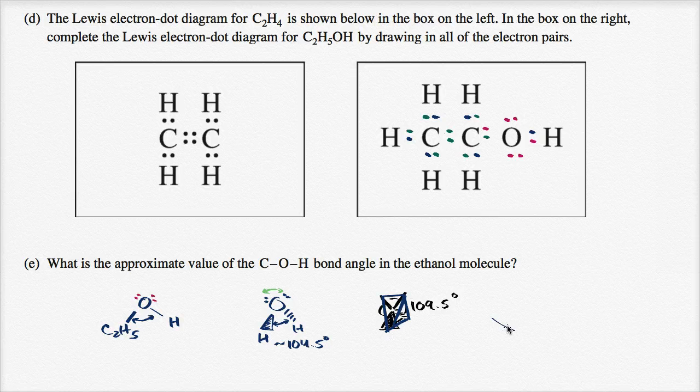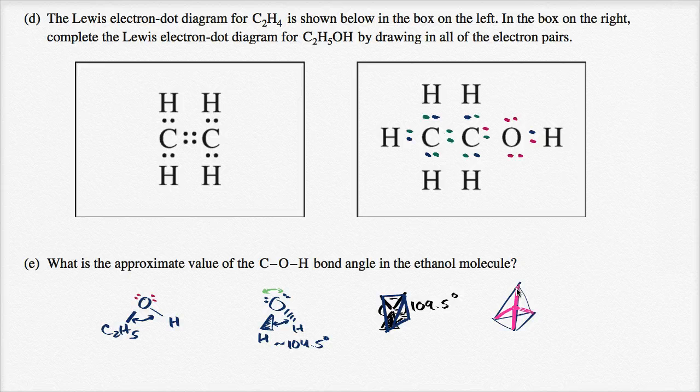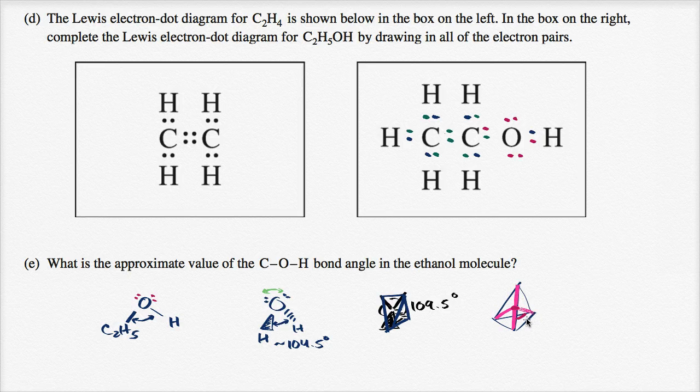If I were to draw a tetrahedron, you have an atom in the middle, and then you have the four bonds. One, two, three, four. I could say four bonds or lone pairs. Then the angle here is approximately 109.5 degrees.